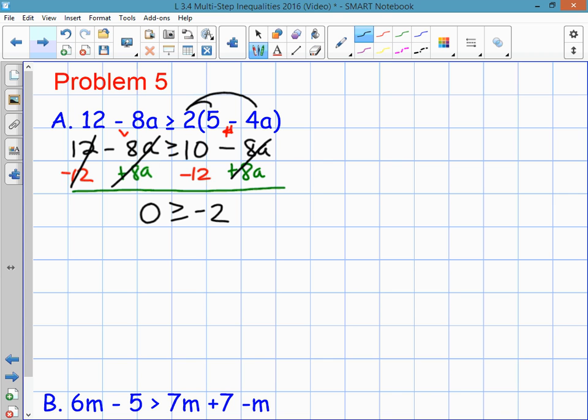So just like an equation, all the variables drop out. And what's left is 0 is greater than or equal to negative 2. So at this point, if the variables go away, you have to ask yourself, is this inequality true? Is 0 greater than or equal to negative 2? And the answer is yes. Now, it's not called the identity with an inequality. Your answer is just all real numbers. And that means it doesn't matter what value you pick for the letter a, when you put it in this inequality, it makes it true. So your answer is all reals.